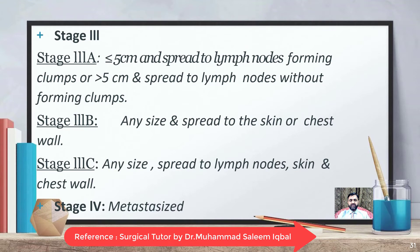Stage 3 is subdivided into three categories. Stage 3a includes tumors ≤5 cm spreading to lymph nodes without forming clumps. Stage 3b includes any size tumor spreading to the skin or chest wall. Stage 3c includes any size tumor spreading to lymph nodes, skin, and chest wall. Stage 4 tumors have metastasized.